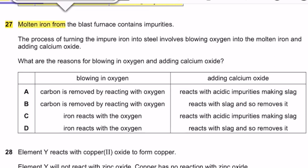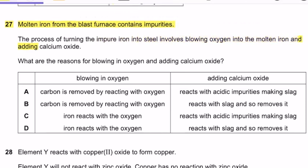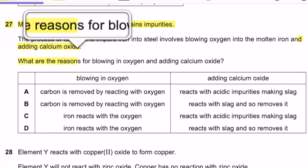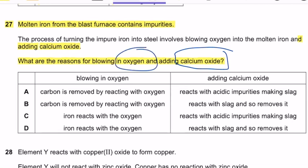Question 27: Molten iron from the blast furnace contains impurities. The process of turning impure iron into steel involves blowing oxygen into the molten iron and adding calcium oxide. Oxygen is blown in to remove carbon by oxidation. Calcium oxide is added to react with acidic impurities, forming slag.